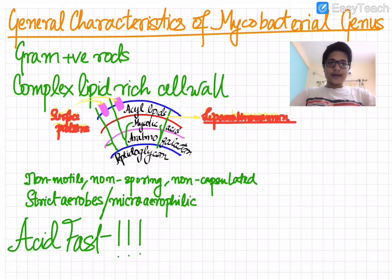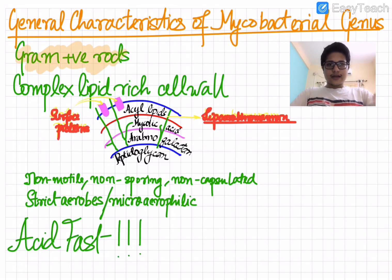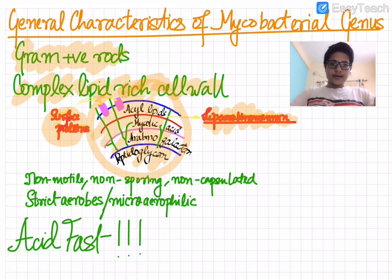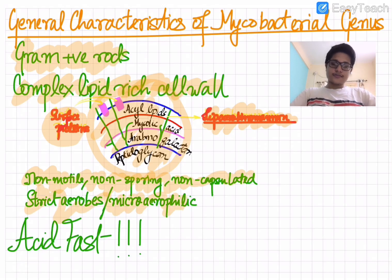First we have to deal with a few general characteristics of the mycobacterial genus. These are gram positive rods which have a complex lipid-rich cell wall. I hope you remember the structure of the cell wall, and these two important things: the surface proteins and the lyco-arabino-mannan protein. These will come in handy when we move on to the diagnosis portion.